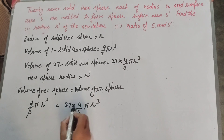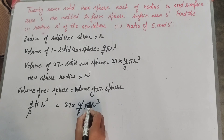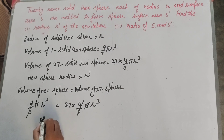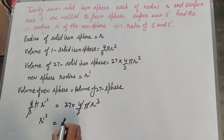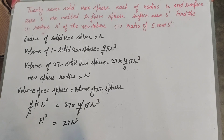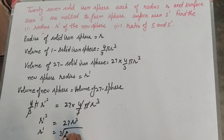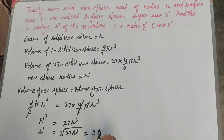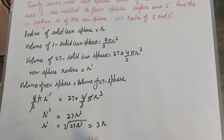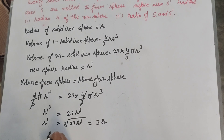Now 4/3 and π on both sides are cancelled. So r'³ equals 27 r³. Therefore r' equals cube root of 27 r³, which equals 3r. So radius of new sphere r' equals 3r.